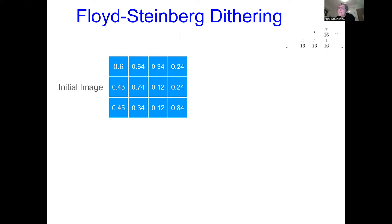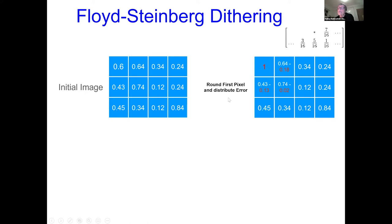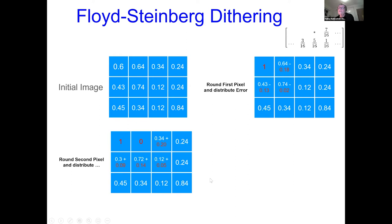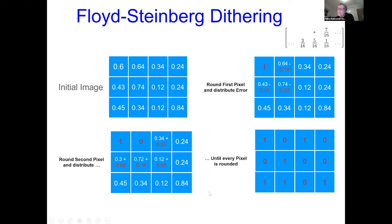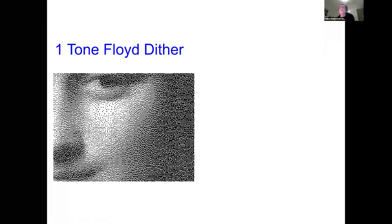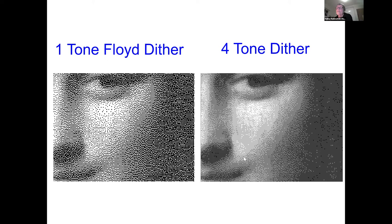I can now apply Floyd Steinberg dithering and what I do is I take the error from rounding the pixels and distribute it to the surrounding pixels within this matrix. And we do it round first pixel and distribute the error and then round second pixel and distribute the error again till we do it with every pixel. And here we see all pixels being rounded. And so if we apply that this is I do one tone Floyd dithering and then I can apply photon dithering and you can see that there is improvement in the image. And we can use the same method with a number of tones, much larger number of tones.